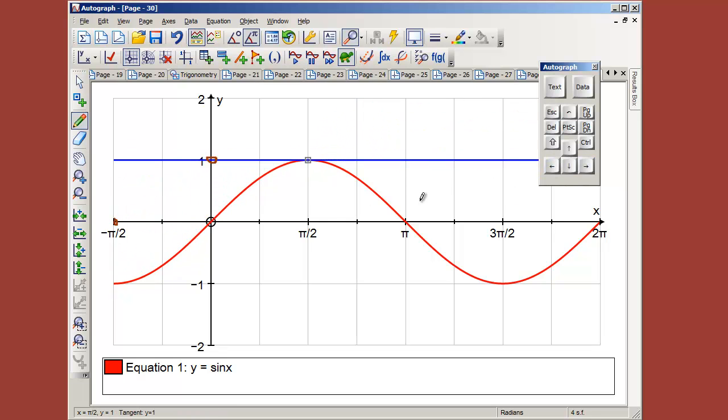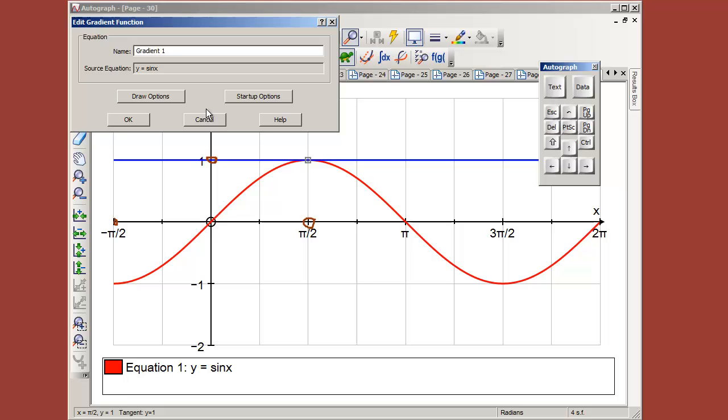And then we have a gradient of zero. So you can see it's quite nice to build it up slowly from first principles, but we also have this function here, which is the gradient function, which will plot slowly. It does exactly what I've just done, but it gives you the results as well.